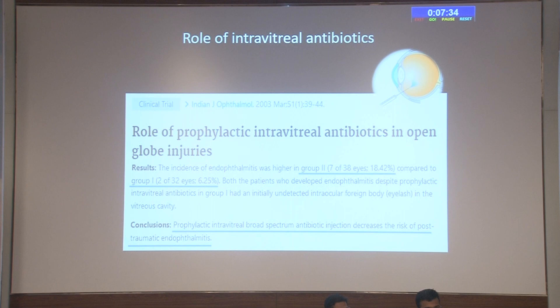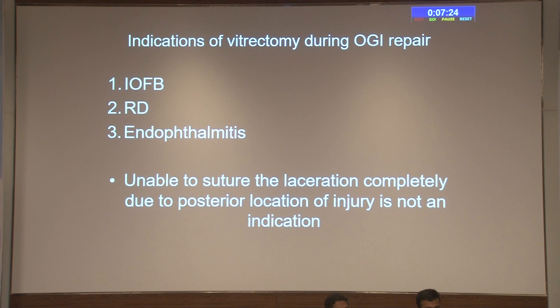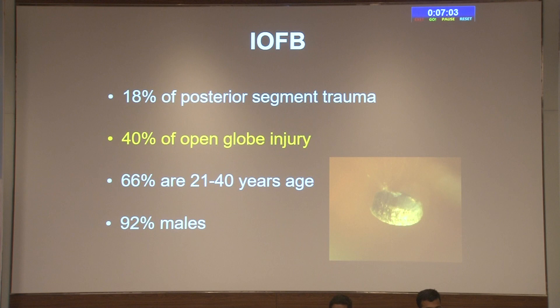Before taking any open globe case with a foreign body to surgery, thorough counseling is essential — ideally involving the whole family — regarding the need for multiple surgeries, frank discussion of prognosis, and the risk of phthisis. The risk of sympathetic ophthalmia of the fellow eye must also be explained. Localizing the foreign body is very important. History contributes significantly; for example, one self-inflicted injury case presented with multiple pins — only three were visible externally but X-ray and CT revealed over 60–70 pins.